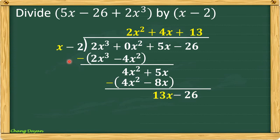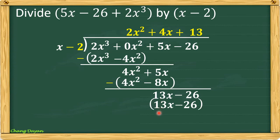Divide 13x by x — the answer is 13. Multiply: 13 times x gives 13x, and 13 times negative 2 gives negative 26. Proceed to subtraction: 13x minus 13x is 0, and negative 26 minus negative 26 is 0. Therefore our answer for (2x cubed plus 5x minus 26) divided by (x minus 2) is 2x squared plus 4x plus 13.